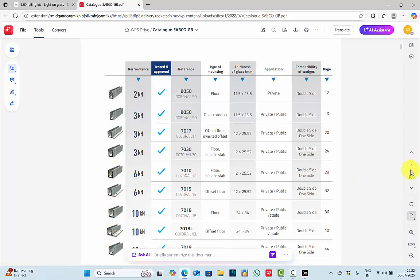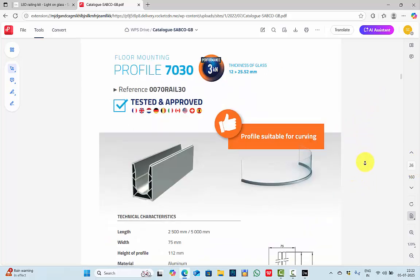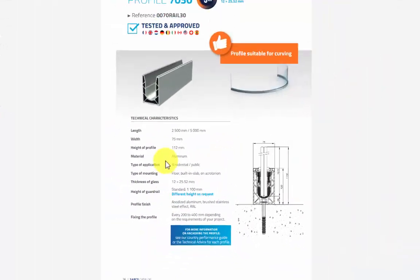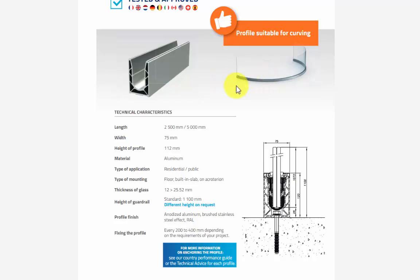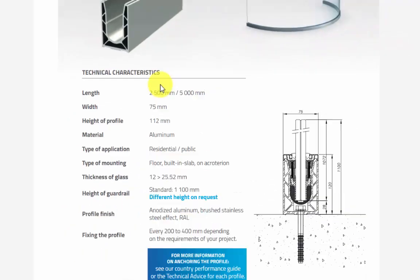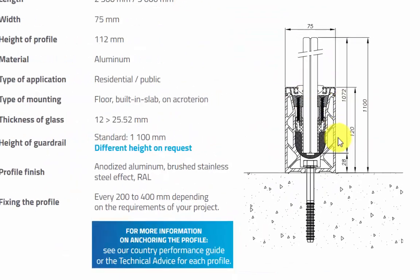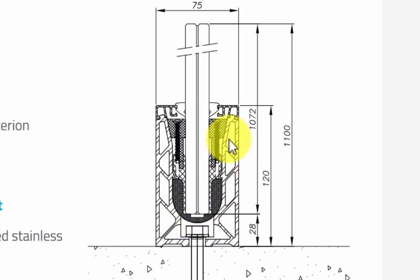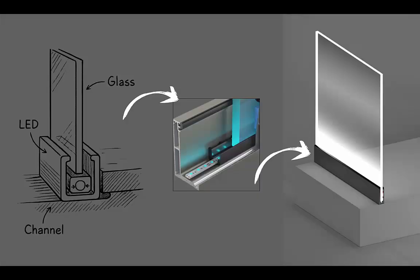Let's consider this profile. This is mounted on the floor — the type of mounting is floor built-in slab — and it is suitable even for curved hand railings. The best thing here is they have section details which will help us make an accurate 3D model. This is the channel, and inside will be the LED profile, and inside the channel will be the glass. Here are some images showing a basic installation of this type of lighting.